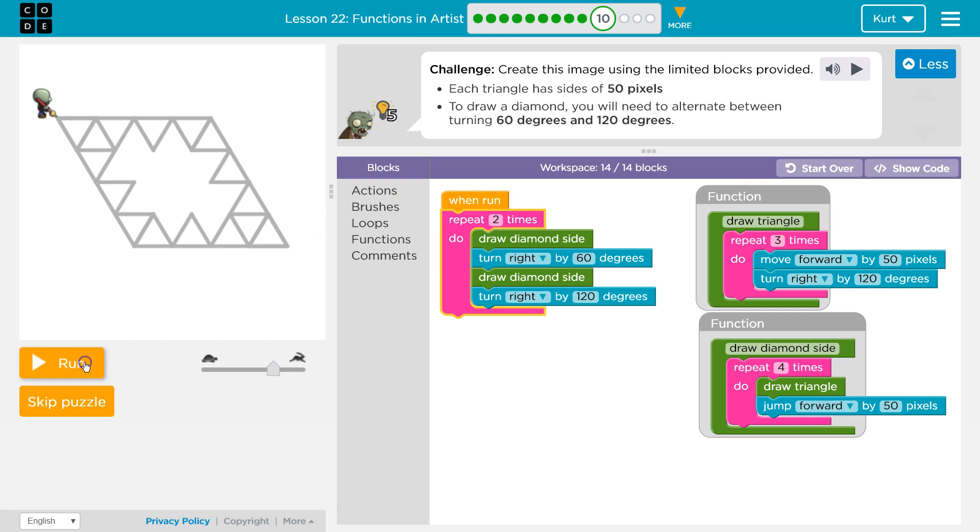And then... So, how this code's going to run is... We hit run. Repeat two times. Draw a diamond side. Draw a diamond side. The computer finds it here. Four times over. Draw a triangle. So, oh, what's that? Oh, here it is. Okay, to draw a triangle,